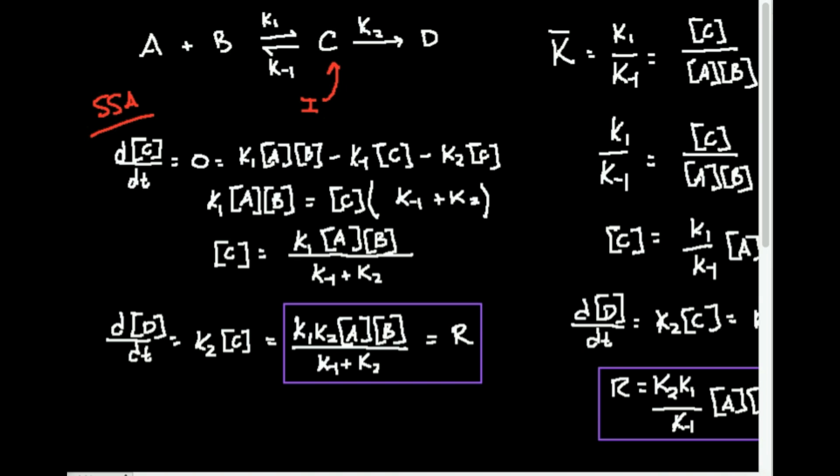The first thing to go over is our general reaction. We have reactant A and reactant B. These two are going to come together and be in equilibrium with an intermediate C. The forward reaction of this equilibrium is defined by rate constant K1. K1, K-1, and K2 are rate constants — not equilibrium constants. That's very important. The reverse reaction from C back to A plus B is governed by rate constant K-minus-1.